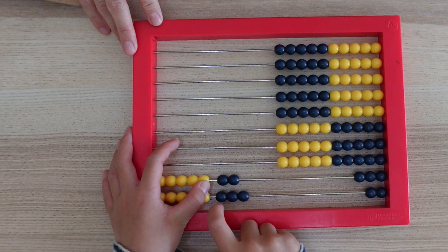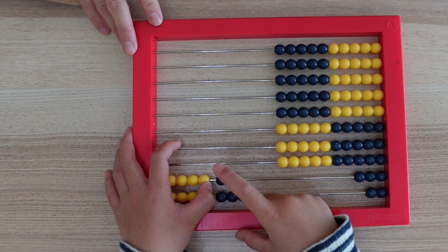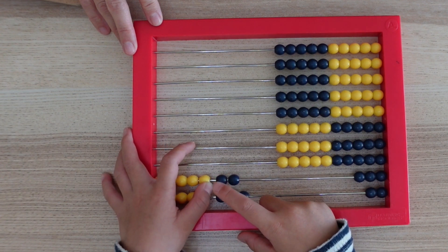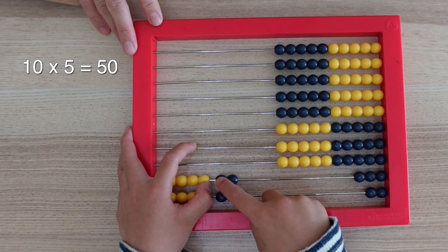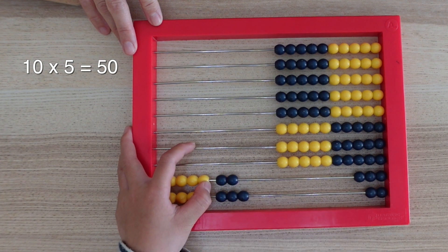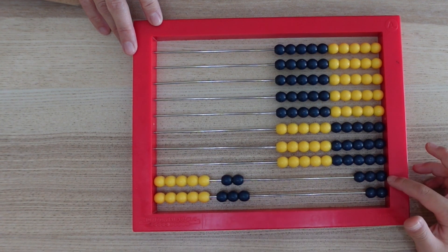First, you have this 5. Each bead stands for 1 ten. So it is 10 taken 5. 10 taken 5 is 50. Let's remember that for now.